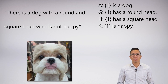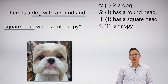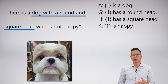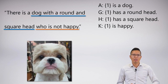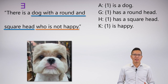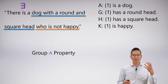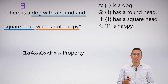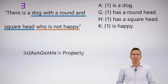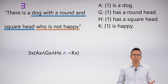Here's another example: 'There is a dog with a round and square head who is not happy.' The natural subject is 'a dog with a round and square head,' and the property is 'not happy.' Are we talking about all dogs with round and square heads, or some? It seems obvious when I say 'there is a' — this is an existential. So we invoke the canonical form: group and property. I get: there exists an X, and the group is AX ∧ GX ∧ HX, and the property is ¬KX.